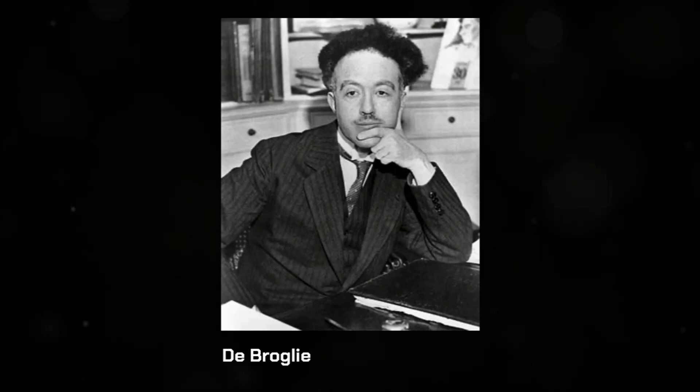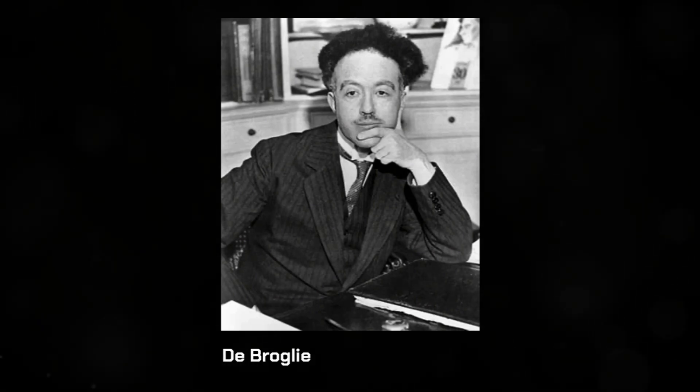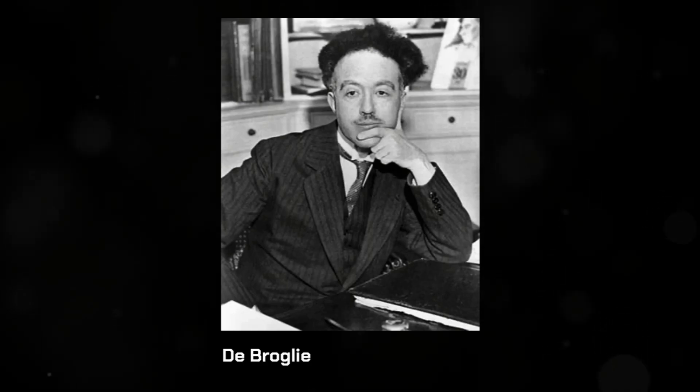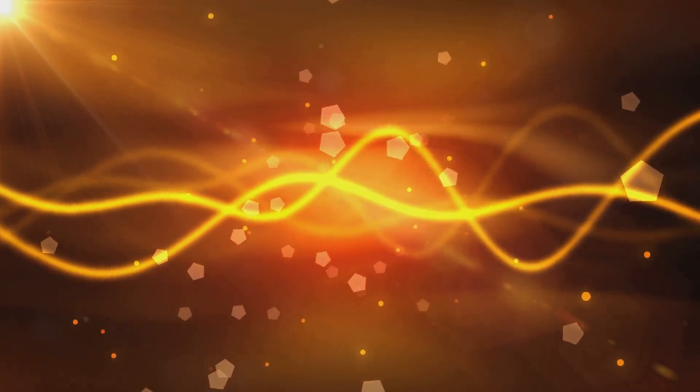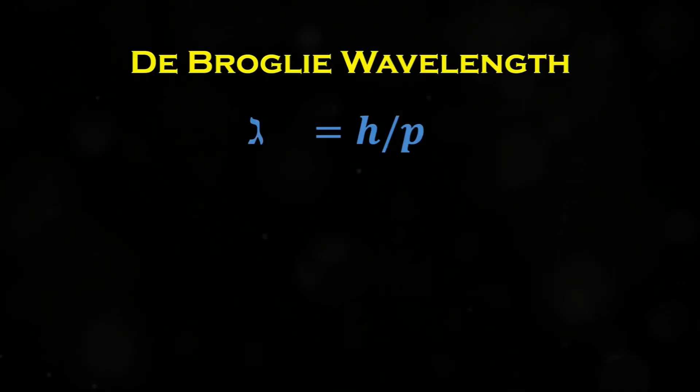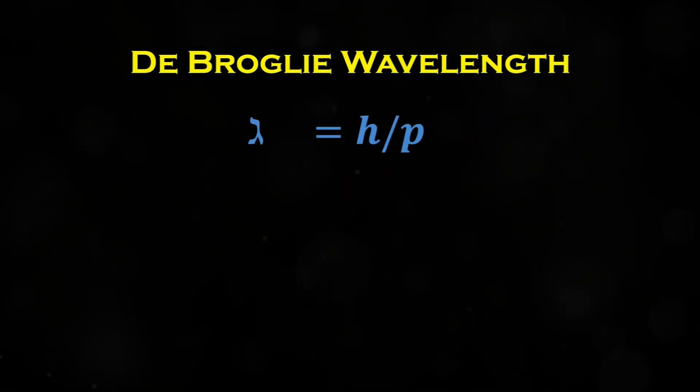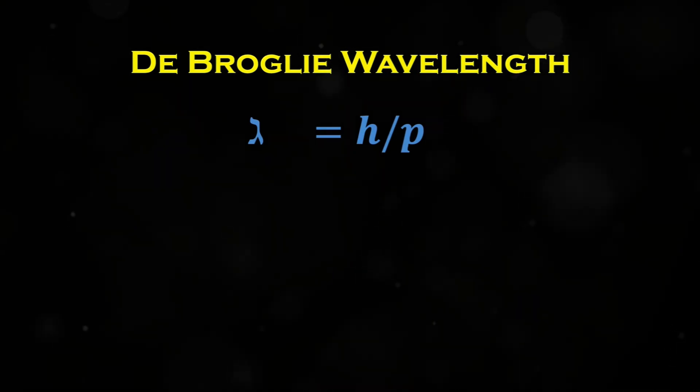In 1924, the French physicist Louis de Broglie made a groundbreaking contribution to our understanding of wave-particle duality. He proposed a revolutionary idea: if light, which we thought of as a wave, could also behave like a particle in the form of photons, then perhaps particles like the ones that make up matter could also exhibit wave-like behavior. De Broglie came up with a simple yet crucial equation to describe this idea. This equation connects the wave-like and particle-like behaviors of all moving objects.